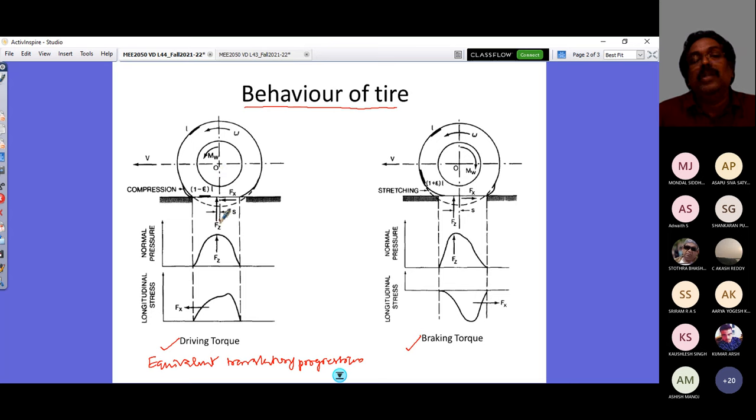You can see here the normal pressure is not symmetric, it is skewed, and this F is coming here with this offset distance. It is primarily because of your rolling resistance hysteresis that we have seen. There are assumptions when you have to develop some theories, and one important assumption is the theory proposed by Julian, that's Julian's theory, named after the researcher.